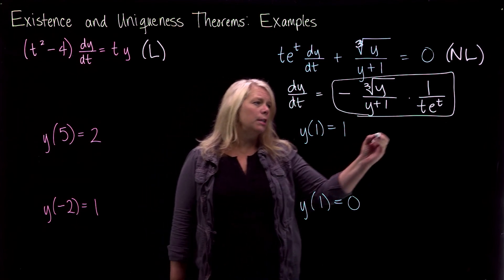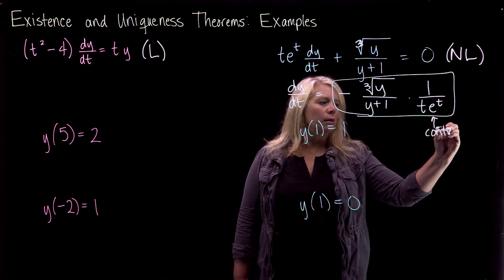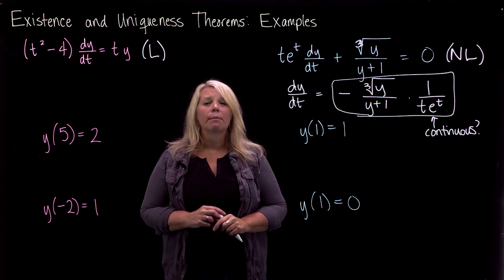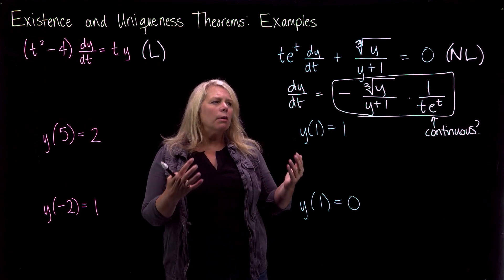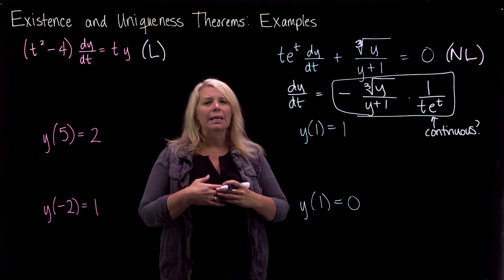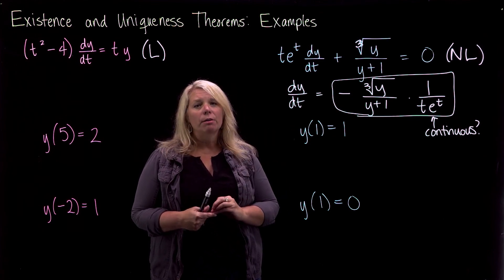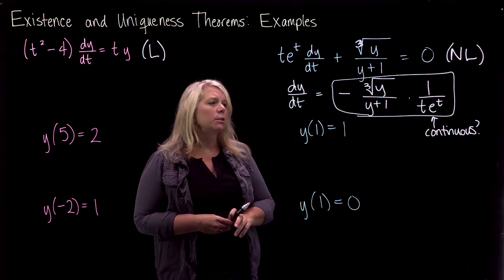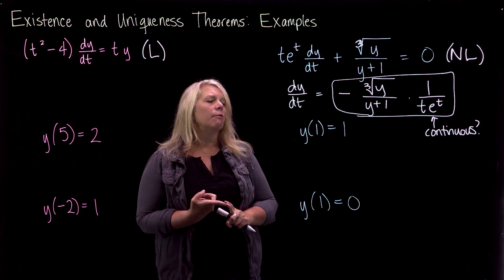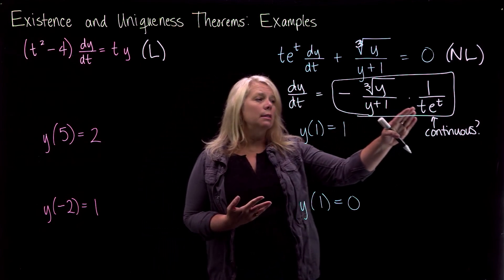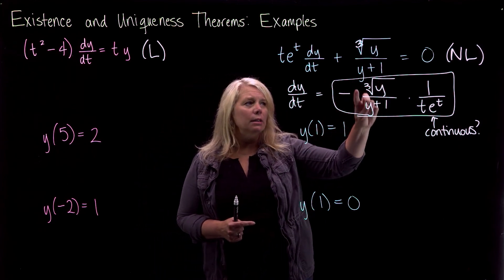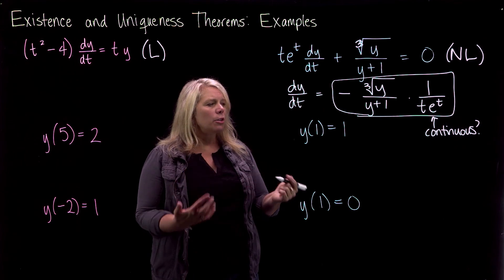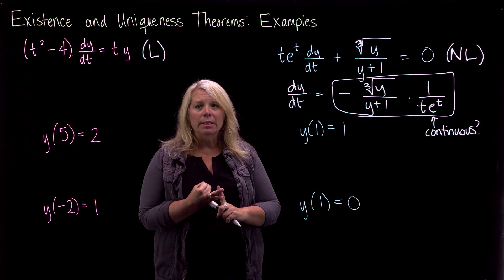When I think about the right-hand side of the differential equation, I'm thinking of it as my function f(t, y), and I want to think about where this function is continuous. That's a function of two variables, so you need your multivariable calculus knowledge and think about continuity. For this particular problem, you're really thinking about where this function is defined. The denominator includes y plus 1, so it's not continuous when y equals negative 1. It's also not continuous when t equals 0. There is a cube root here, but a cube root is continuous for all values, so this is continuous everywhere except y equals negative 1 and t equals 0.